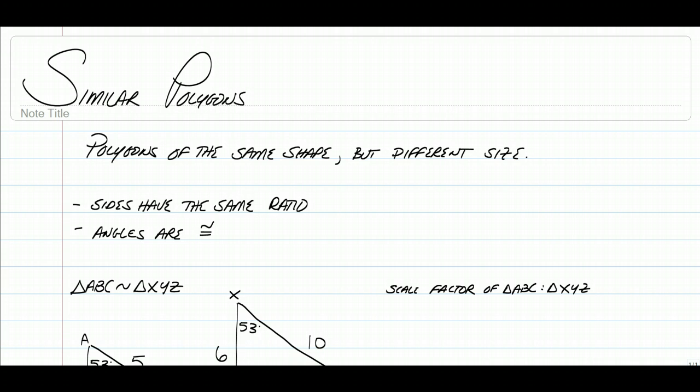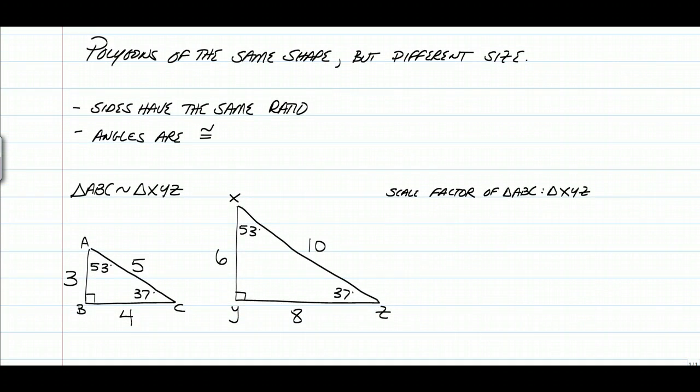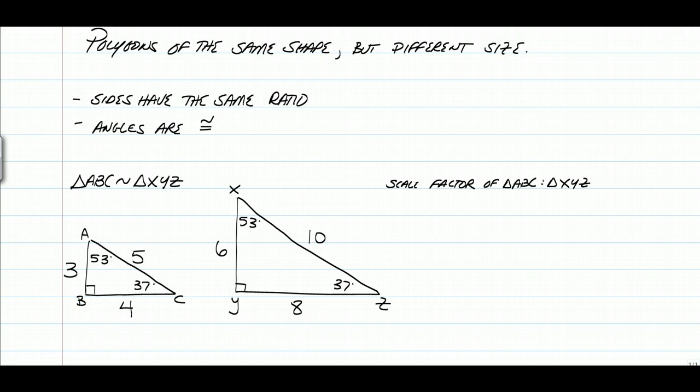Okay, to make that happen with polygons, the sides have to have the same ratio, but the angles have to be congruent. And by the time we're done talking about this example, you will understand why.